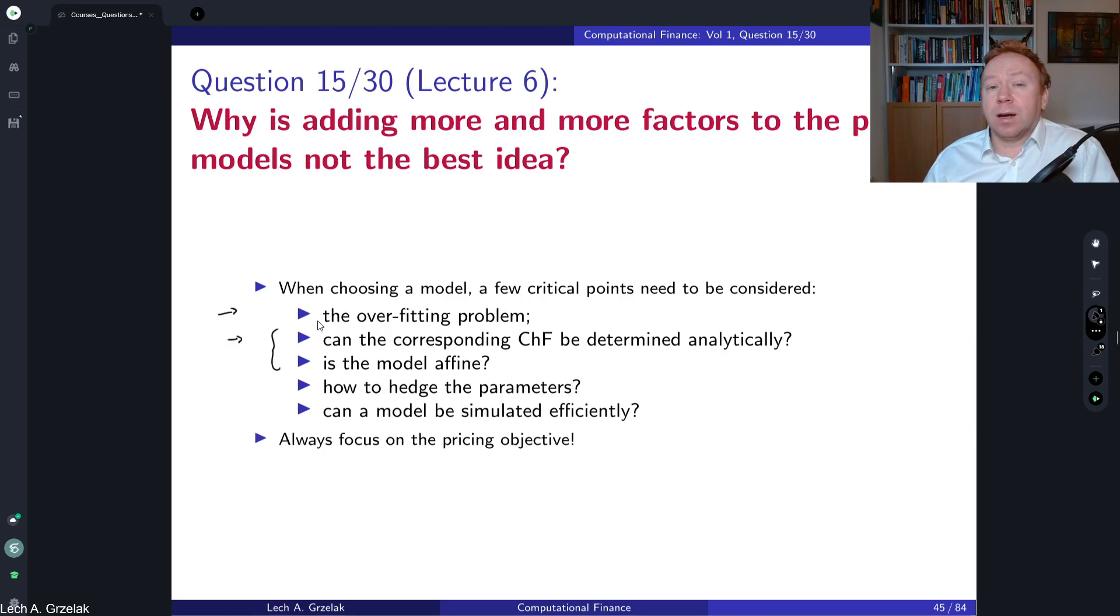There are for example variants like a double Heston model which introduces additional factor for the variance. However, those models are not very successful because they are not having enough flexibility, so the flexibility is not there. In the lecture I'm explaining the reasons for that; this is maybe outside of this question. Here we focus on why it is not the best idea. One of these problems is the affinity constraint. Very likely the model will not be affine, or if the model is affine, very likely you will not be able to gain sufficient amount of flexibility in order to calibrate to the market data.